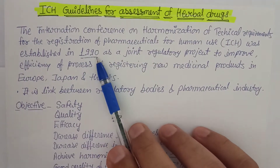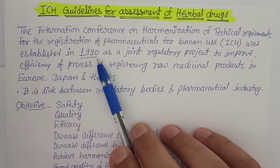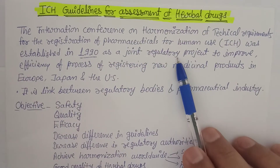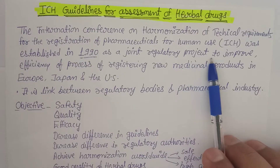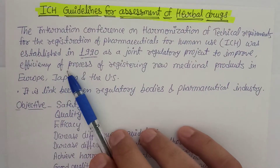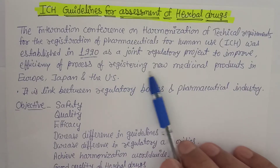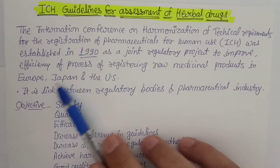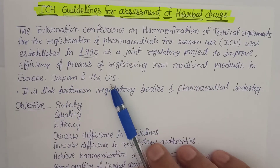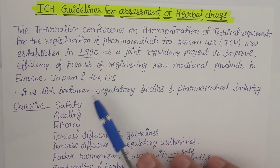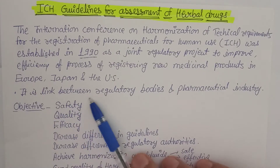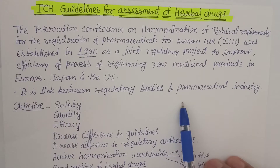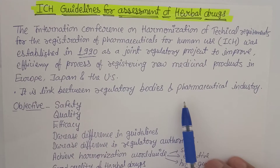ICH was established in 1990 as a joint regulatory project to improve the efficiency of the process of registering new medicinal products, including herbal drugs, in Europe, Japan, and the United States. It is essentially a link between regulatory bodies and the pharmaceutical industry.